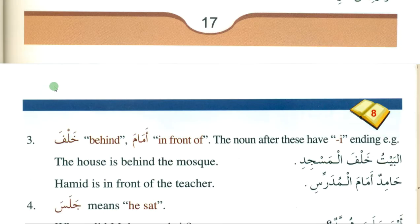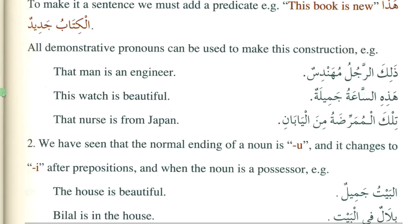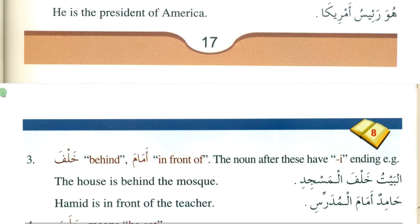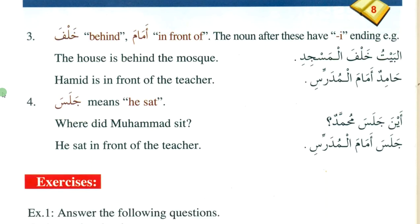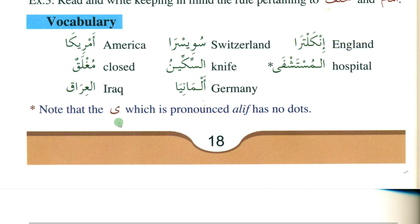You need to read the whole page — pause the video and read it. You also need to read the next page carefully. Try to memorize all these points. Then there is some vocabulary — pause the video, read the vocabulary, and memorize it. The letter alif maqsura is pronounced as alif. The difference between alif maqsura and yaa is that alif maqsura has no dots, while yaa has two dots.